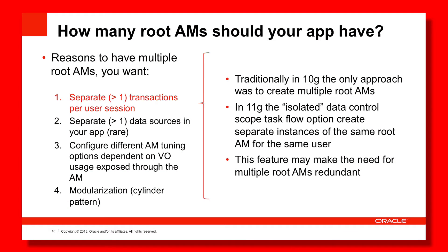Now let's revisit those reasons. The first reason - wanting multiple connections and transactions per user session - traditionally required creating multiple root AMs at design time. But from the previous ADF Architecture TV episodes, specifically the bounded task flow data control scope episode covering the isolated option, we now know that with one design-time root AM, at runtime we can actually instantiate two instances of that root AM with separate connections and transactions. This removes the design-time need for multiple root AMs.